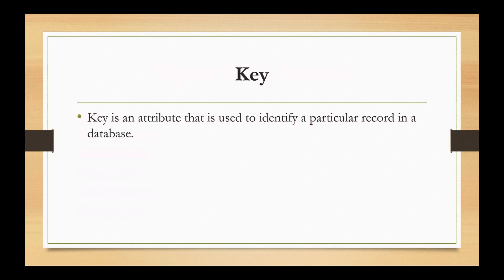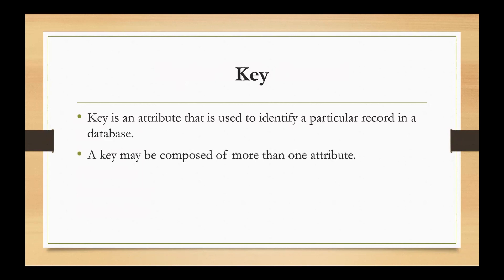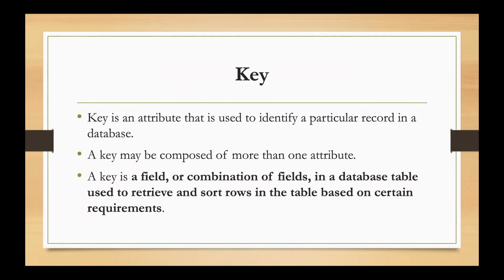What is the definition of the key? The key is an attribute that is used to identify a particular record in a database. The key may be composed of one or more attributes. The key is a field or combination of fields in a database table used to retrieve a sorted row in a database based on the requirement.